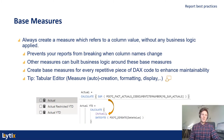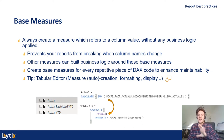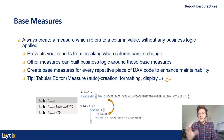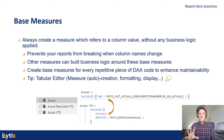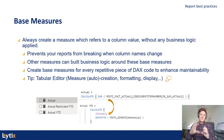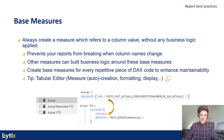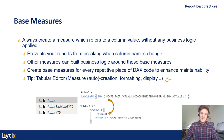Arriving at the third report best practice: base measures. Always try to create a base measure, which refers to a column value without any business logic applied at all. Why use a base measure? It prevents you from breaking any column name changes, prevents measures from getting out of sync, and allows you to reuse measures within other measures. If you need to make adaptations later on, you can just make the change on the base measure and all dependent measures will automatically show the right figures. This clearly enhances maintainability. I need to show you how you can use Tabular Editor to create your base measures in a very fast way. Let's dive into it.